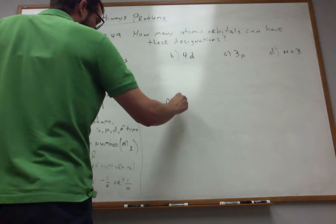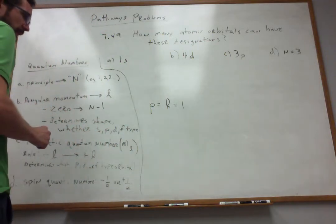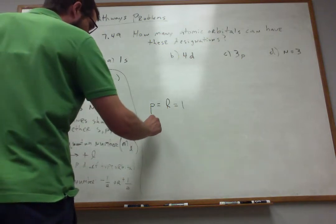Isn't it equal to 1? So if that's the case, what are my allowed magnetic quantum numbers?